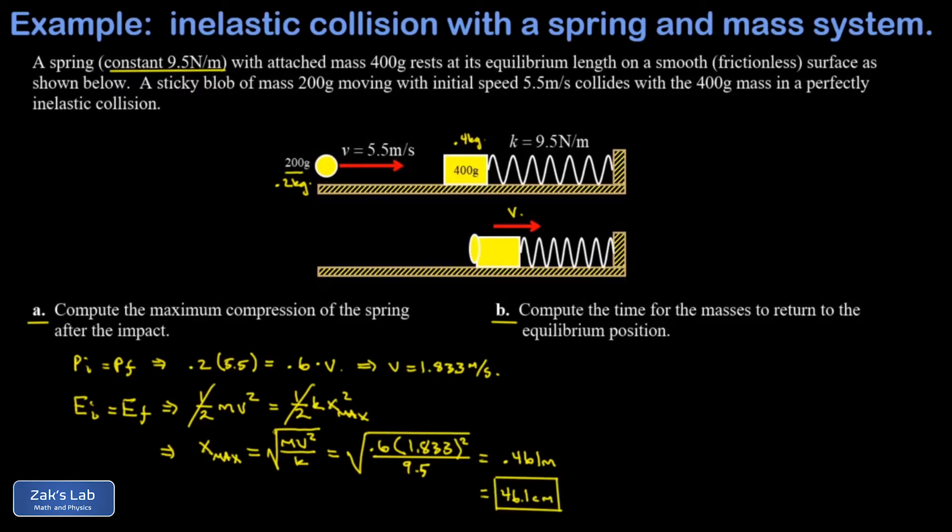So after reaching maximum compression, this combined mass is going to turn around and spring back through the equilibrium position. We want to find the total time to get from equilibrium back to equilibrium again. And the key to this is that the time we're looking at is exactly one half of an oscillation, so I'm looking at one half the period of oscillation for this simple harmonic oscillator. Well, the period of a simple harmonic oscillator is given by 2π√(m/k).